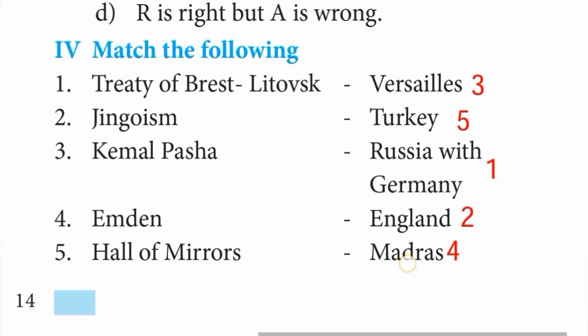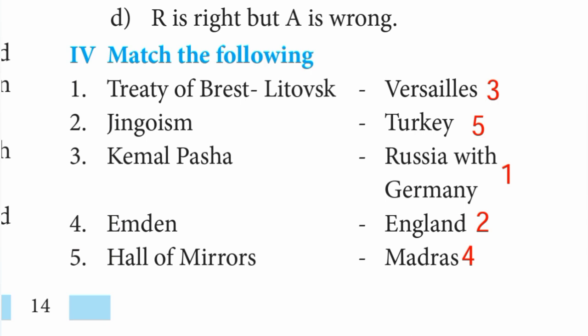Moving to Roman number 4 — match the following. Treaty of Brest-Litovsk — Russia with Germany. Jingoism — England. Kemal Pasha — Turkey. Treaty of Versailles — Hall of Mirrors. The answer for Turkey is Turkey.